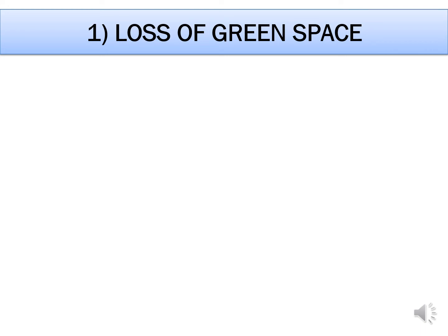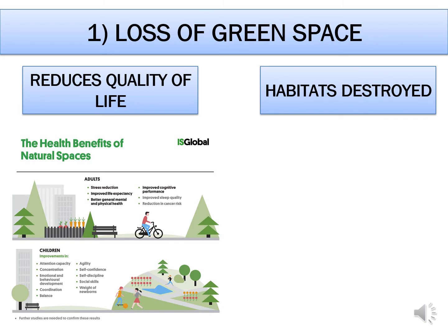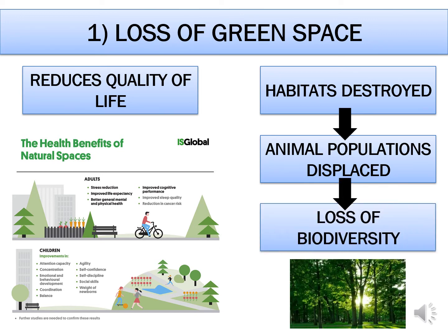Focusing on the impacts of urban sprawl, the first — a loss of green space — is perhaps the most obvious. Losing green space reduces people's quality of life; research shows that being in close proximity to natural and green areas has all sorts of benefits. It also has environmental impacts, for example habitats being destroyed, which displaces animal populations, and leads to a loss of biodiversity — the different plant and animal species that exist within an area.